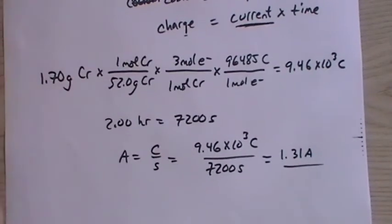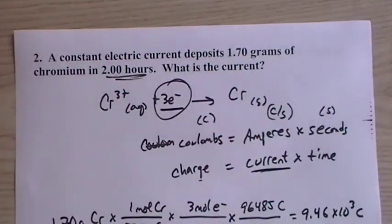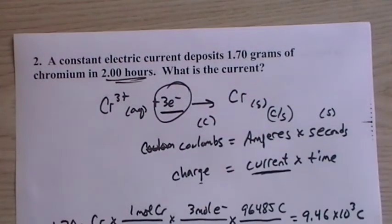That's the current that went through for two hours to deposit 1.70 grams of chromium. And from your lab experience, you know how small amount that is. And 1.3 amps is no laughing matter. That's a pretty good current. And so over two hours, it doesn't really deposit that much. One of the reasons is because we have to put three moles of electrons in for just one mole of chromium.